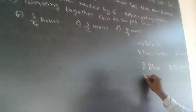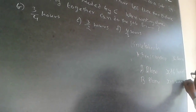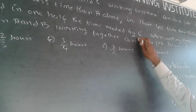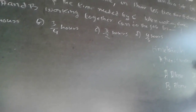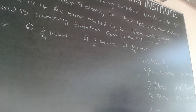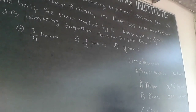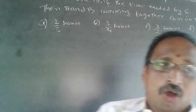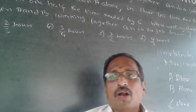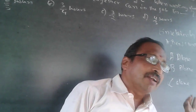Similarly, B alone will do it in x plus one hour. And since the three together take one half the time needed by C alone, C alone will do it in two x hours — because half of 2x is x. When dealing with time and work problems, always convert to work done by one person in one hour.